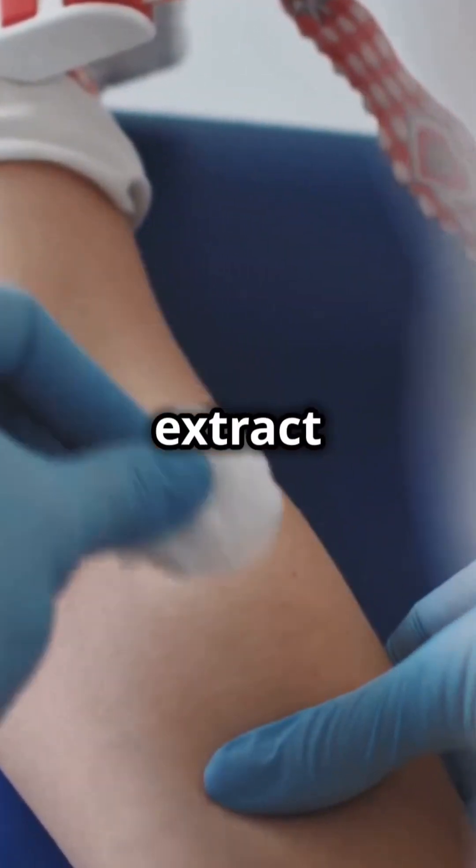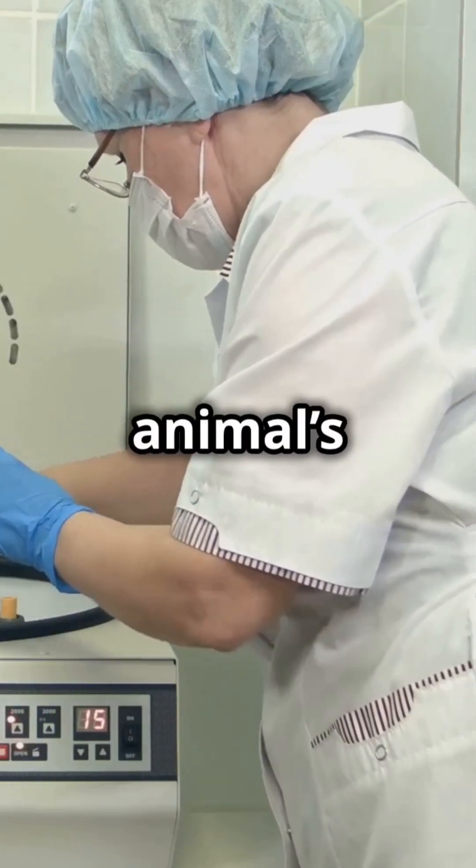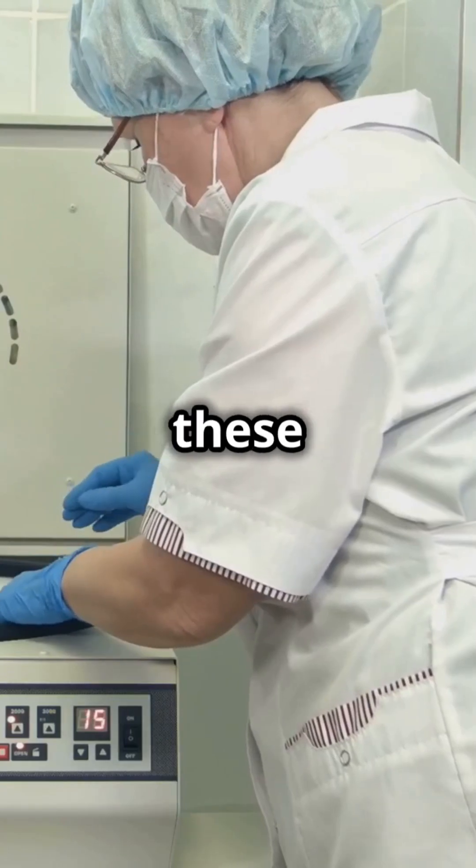Next, we extract those antibodies. After several injections, the animal's blood is drawn and purified to collect these antibodies. We have antivenom.